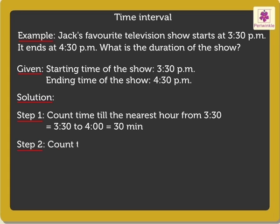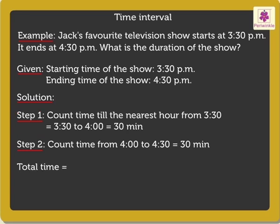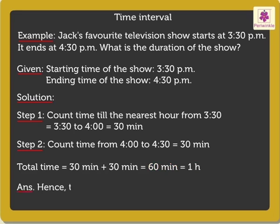Step 2: Count time from 4pm to 4:30pm — on counting, we get the answer as 30 minutes. So here from steps 1 and 2, we get the total time as 30 minutes plus 30 minutes, which is equal to 60 minutes. But we all know that 60 minutes is equal to 1 hour. Thus, we get the answer as 1 hour. Hence, the duration of the TV show was 1 hour.